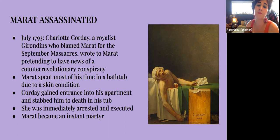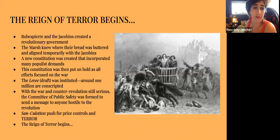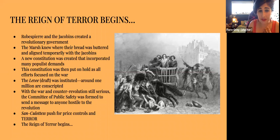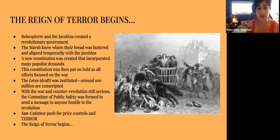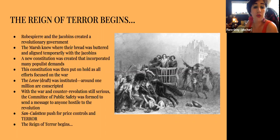Then the Reign of Terror really begins. Robespierre and the Jacobins created a revolutionary government, and the Marsh knew where their bread was buttered and aligned themselves with it. A new constitution was created incorporating many populist demands, but was immediately put on hold to focus on the war effort. The levée — the draft — was instituted, conscripting around one million men. With war and counter-revolution still serious, the Committee of Public Safety was formed to send a message to anyone hostile to the revolution. The sans-culottes pushed for price controls and terror, and the Reign of Terror begins.